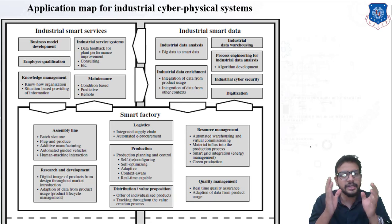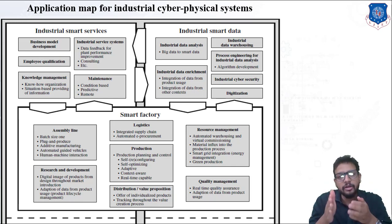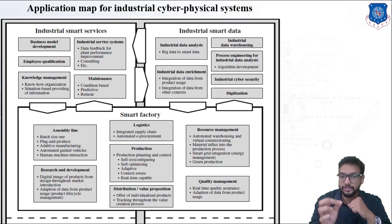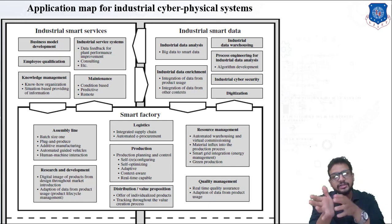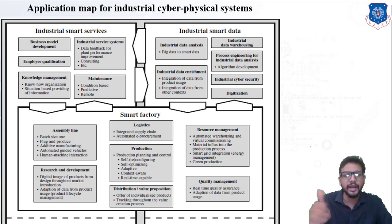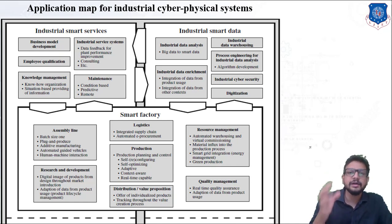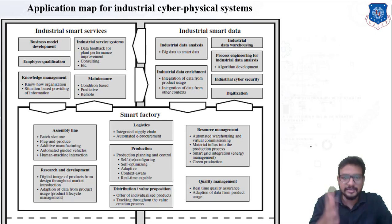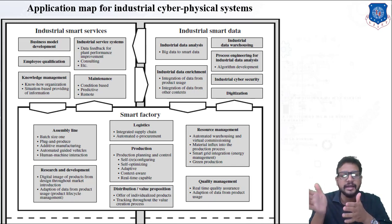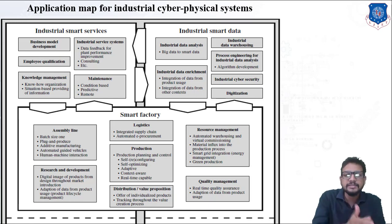Next is process engineering for industrial data analysis. Continuously inflowing and stored data needs to be processed and interpreted. The continuous development and advancement of algorithms to process data and obtain the most valuable information is the main task. The first task is industrial data warehousing — storing the data. The second task is process engineering for industrial data analysis — filtering to obtain the most important data. This process can be summarized as: big data is converted into smart data.